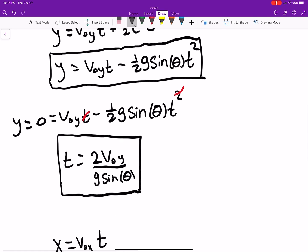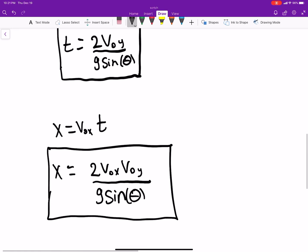And if we want to know how far it is from the origin, then all we have to do is plug that time that we found for it to get back to ground level into this equation for position for x. And there you go.